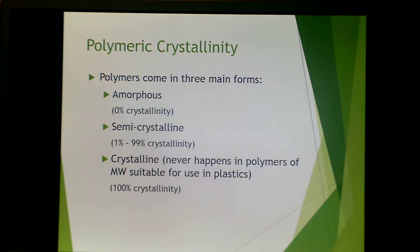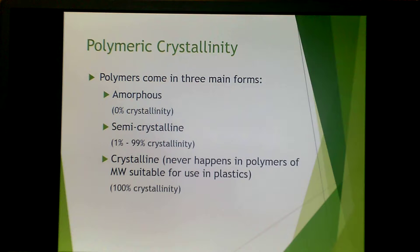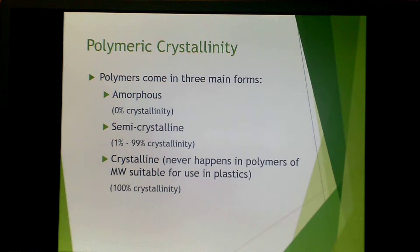Polymers come in three main forms: amorphous, semi-crystalline, and crystalline. Truly fully crystalline polymers almost never happen. Usually we're looking at semi-crystalline polymers or amorphous polymers.